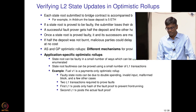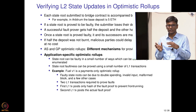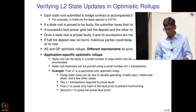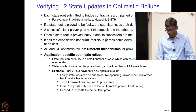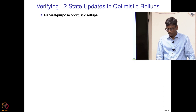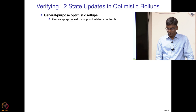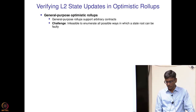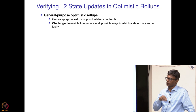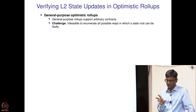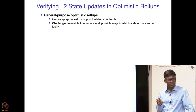In general-purpose optimistic rollups, we need to play an interactive game between the challenger and the prover, because it is infeasible to enumerate all possible ways a fault can be present. General-purpose rollups support arbitrary contracts, so all possible ways in which a state root can be faulty cannot be enumerated. The setup is: there is an assertor who posts a new state root to the bridge contract, and a challenger who says the state root is incorrect.